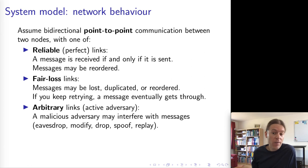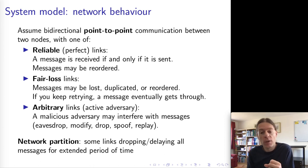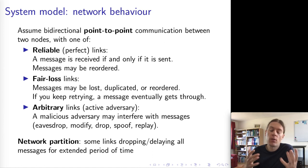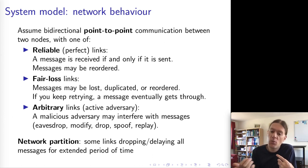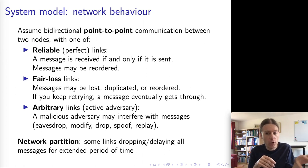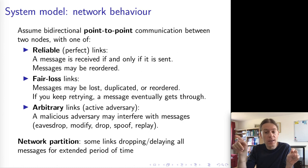Unfortunately, an arbitrary link model is a reasonable model of how the internet works today. A related piece of terminology is the concept of a network partition — where nodes are still running fine but the communication link between them is interrupted. Usually this interruption is for a finite period of time, and eventually the partition gets repaired. But the period of interruption might be quite substantial. You might have one subgroup of nodes able to communicate, a different subgroup able to communicate, but those two groups cannot communicate between them because the network link is interrupted.